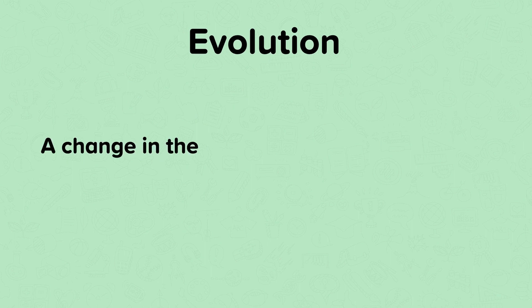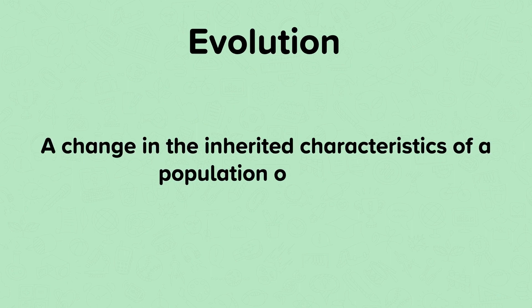Evolution, put simply, is a change in the inherited characteristics of a population over time. A population is a group of the same species, so we are looking at changes in inherited characteristics in a particular species.